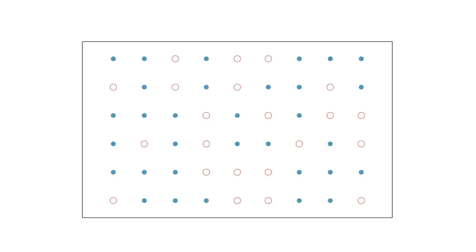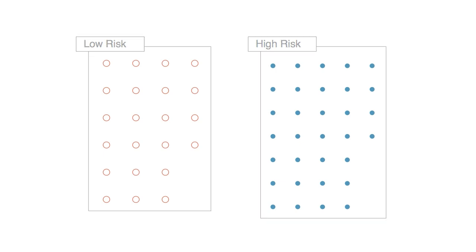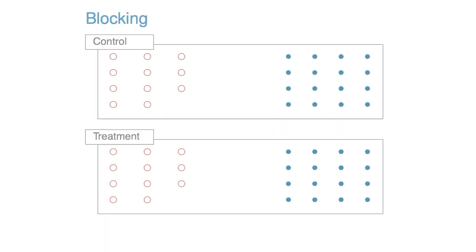Next, let's consider blocking. Suppose we are looking at the effect of a specific drug on heart attacks. We might first divide patients into low-risk and high-risk blocks. Then we can divide each block evenly into the treatment groups using randomization. This strategy, known as blocking, ensures an equal representation of patients in each treatment group from both the low-risk and high-risk categories.